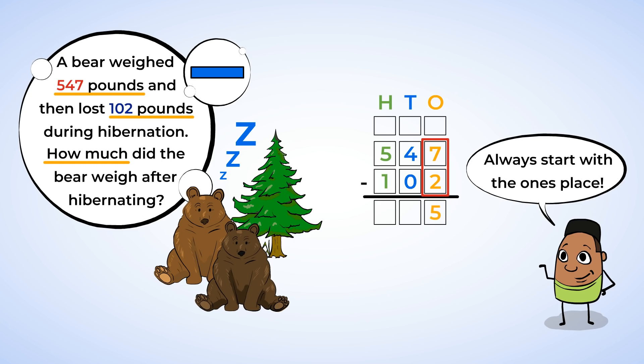Write 5 in the ones place. Now we move over to the tens place. 4 minus 0 is still 4. So we write 4 in the tens place. Finally, subtract the digits in the hundreds place. 5 minus 1 is 4. Write 4 in the hundreds place.